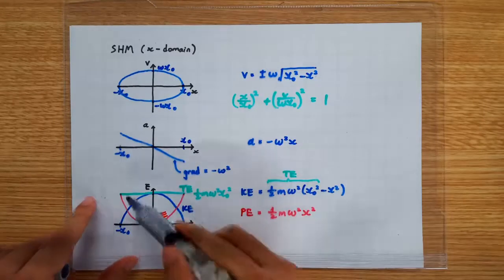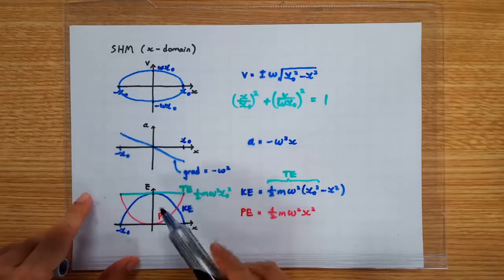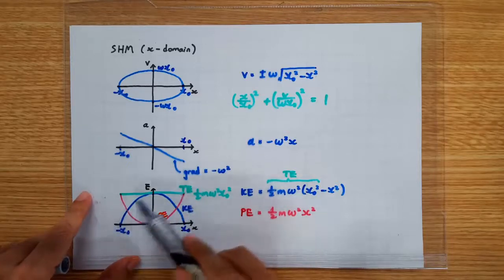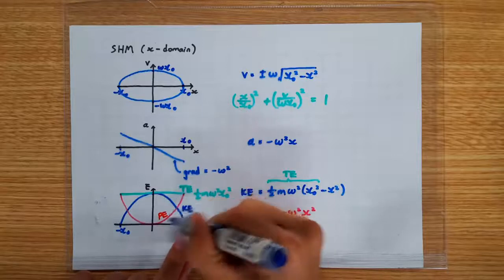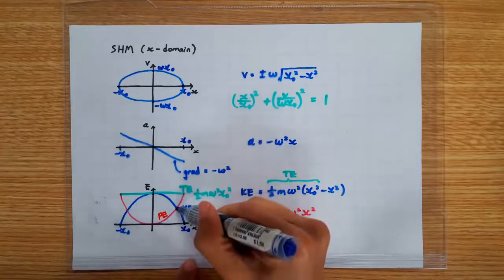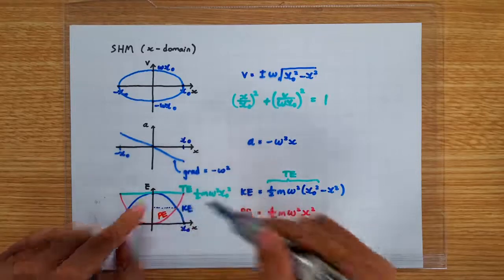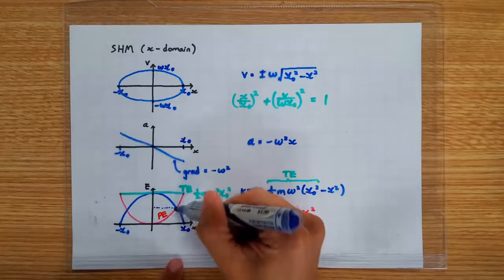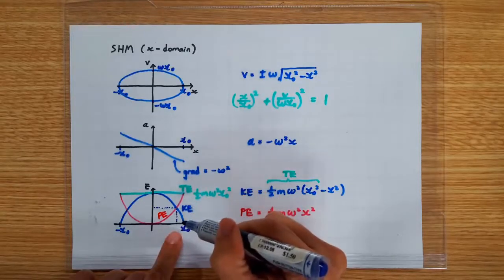Okay, something to watch out for. If you're asked to sketch these two graphs, make sure that they are mirror images of each other. And since they are mirror images, when they intersect, they should intersect at the halfway point here. And that happens actually at x0 divided by square root of 2.